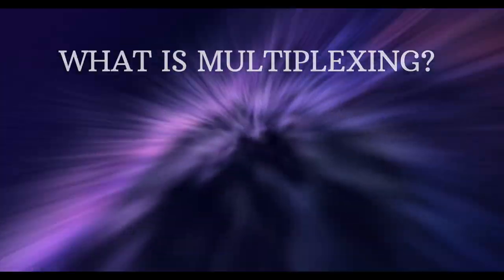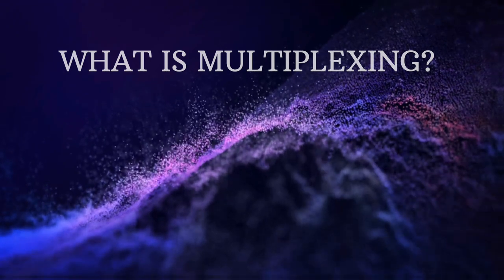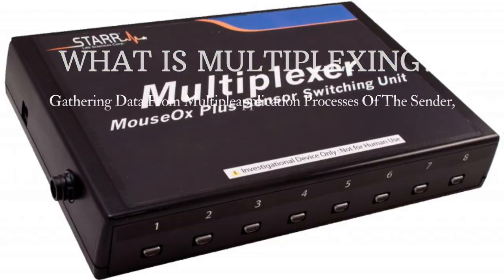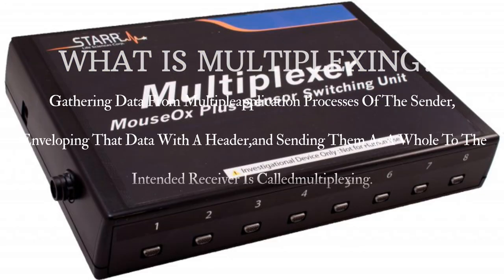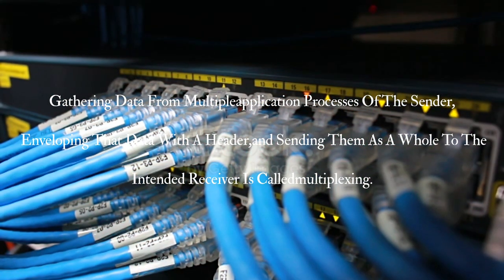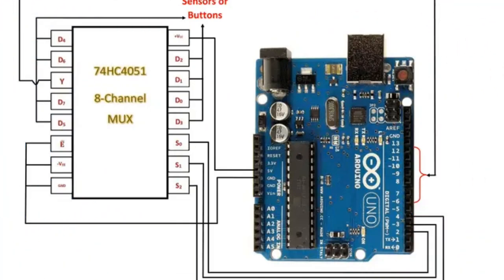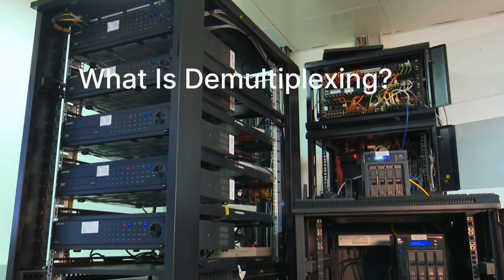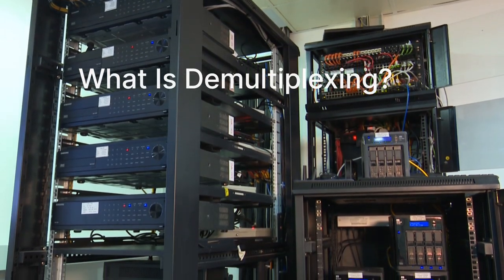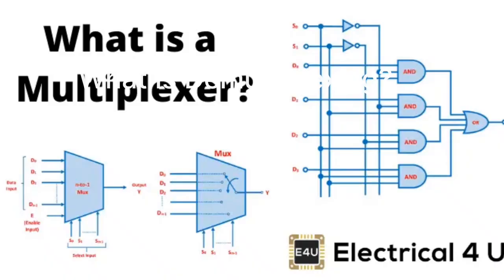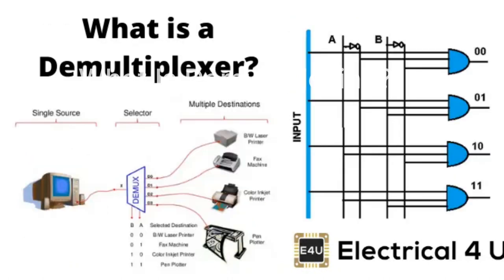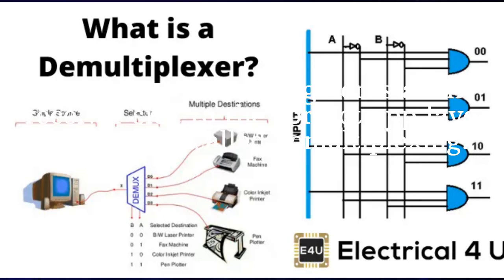What is multiplexing? Gathering data from multiple applications or processes at the sender, involving that data with the header, and sending them as a whole to the intended receiver is called multiplexing. What is demultiplexing? Delivering received segments at the receiver side to the correct application layer processes is called demultiplexing.